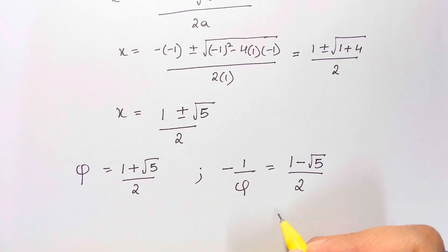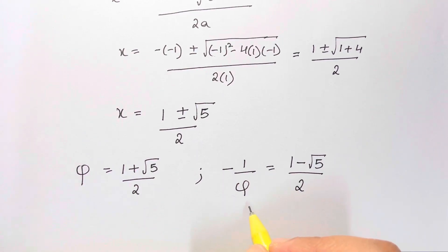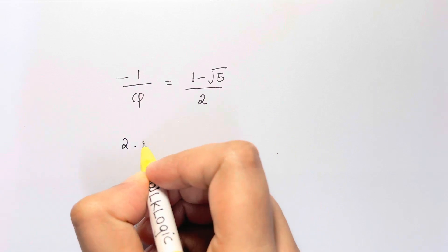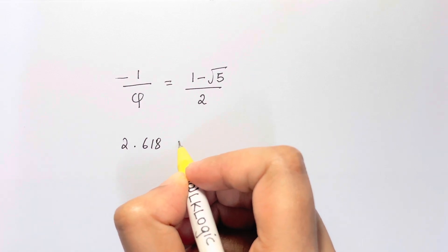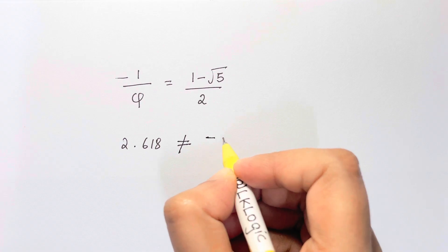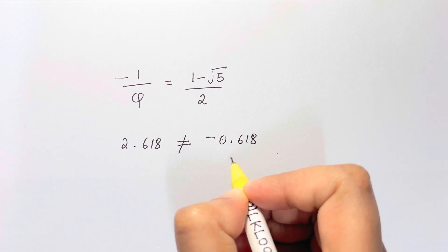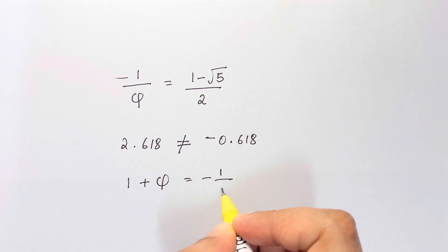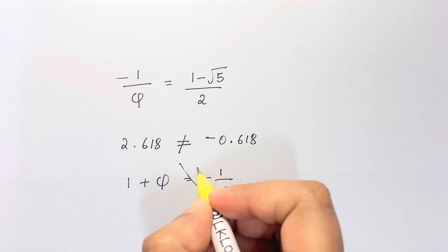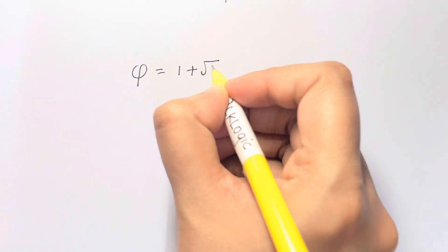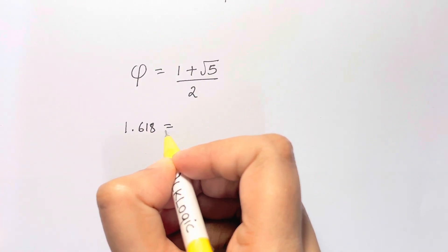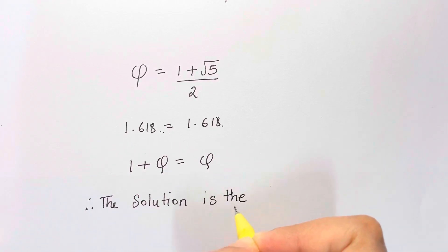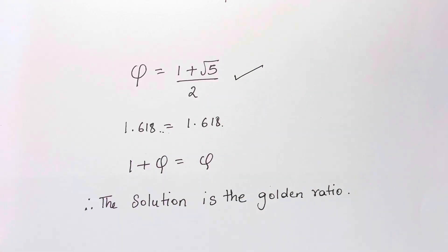Let's check whether either root is a valid solution. Going back to the original equation, the negative root cannot be a valid solution because the sum of two square roots must be a non-negative number, but that root gives a negative x. So we eliminate it. The golden ratio, (1 plus square root of 5) over 2, is indeed a valid solution. Therefore, the solution to the equation is the golden ratio.